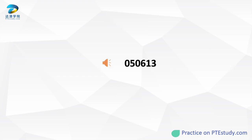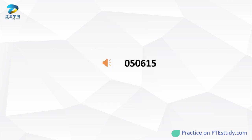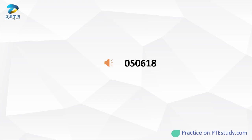How do you call the diagram which includes a horizontal line called the x-axis and a vertical line called the y-axis? How many wheels does a tricycle have? Which part at the end of a book can be used for further reading, an index or a bibliography?